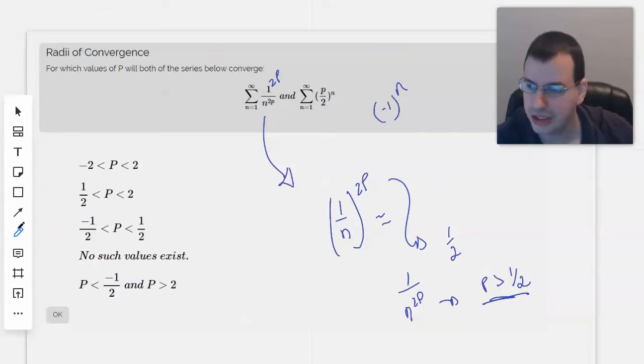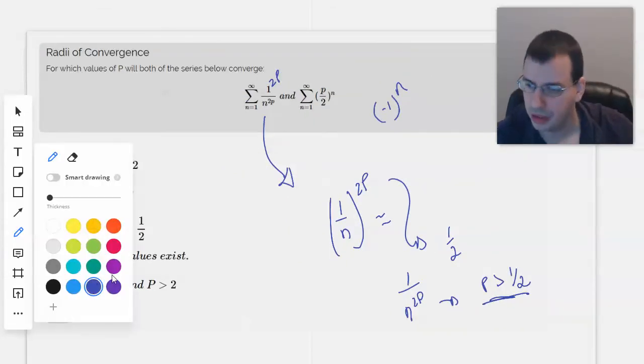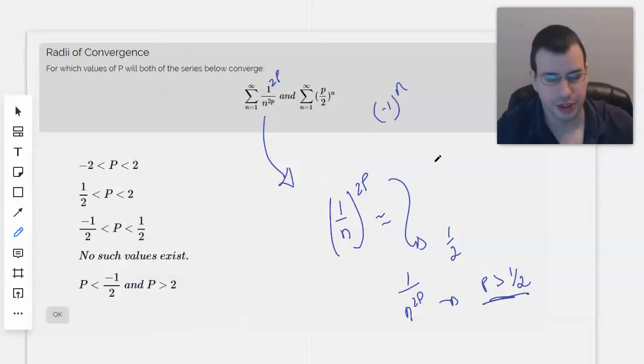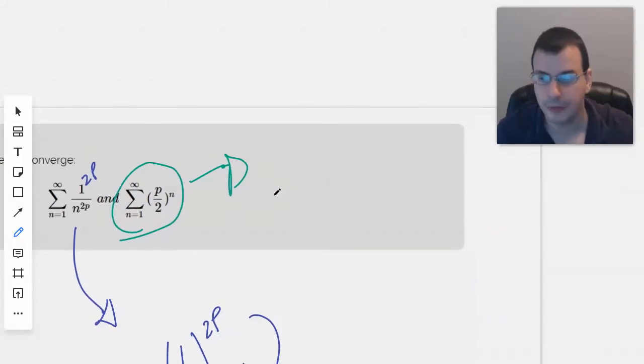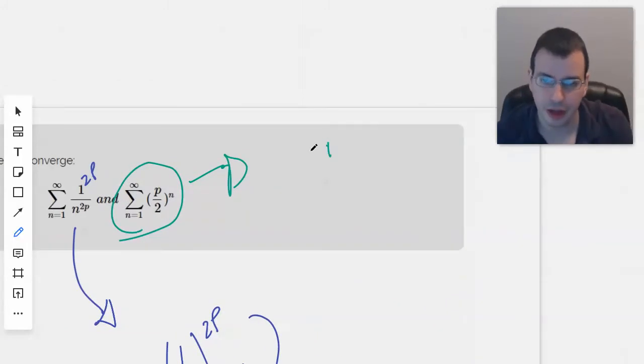Okay, looking at the second series. And of course, changing colors. So for this, this is a geometric series. The formula for the value of a geometric series is, let's see here.